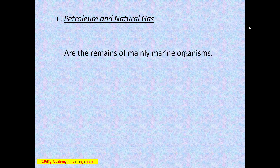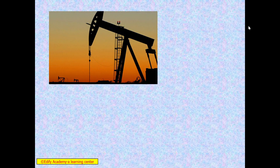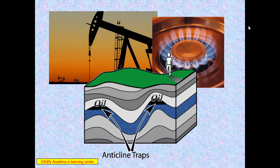Next is petroleum and natural gases. Petroleum and natural gases are very readily available in the ocean's bed because those are the remains of marine organisms. They are typically found in underground formations called traps, with natural gases trapped on top and oil on the bottom. We can see how oils and natural gases are extracted from the ocean bed using oil plant machines. Burning gas is called methane (CH₄), and these are the underground traps where oils are extracted.